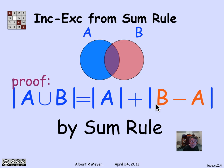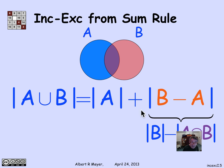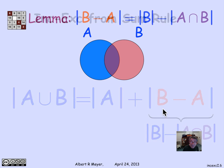We conclude by the sum rule that the size of A union B equals the size of A plus the size of B minus A. Now we need a small lemma: the size of B minus A equals the size of B minus the size of A intersection B. If we establish that, we've proved inclusion-exclusion, giving us A plus B minus the size of A intersection B.